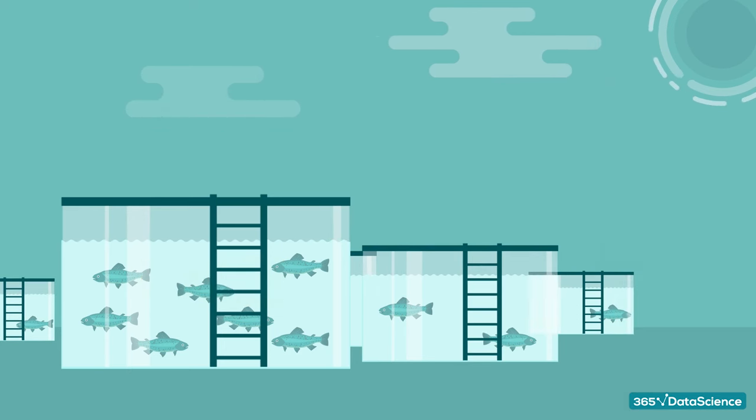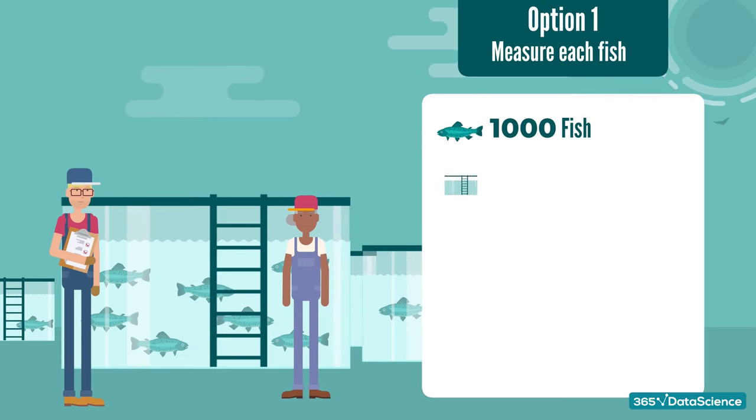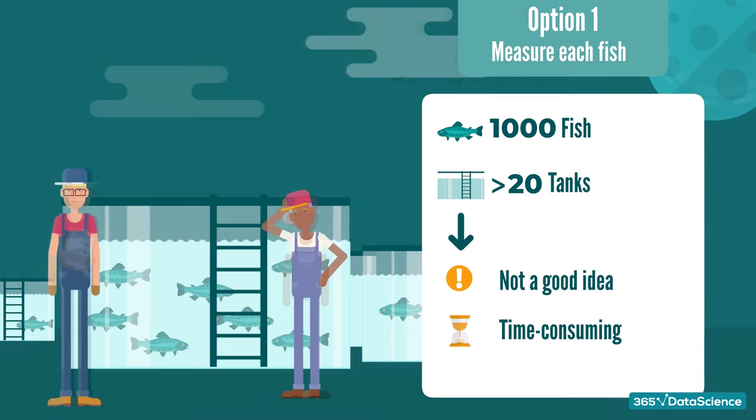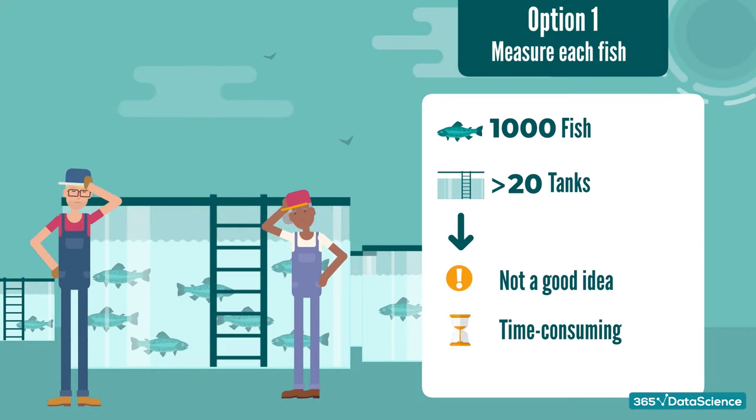Let's think about it for a second. One option is to try to measure each fish separately, but there are 1,000 fish in each tank, and more than 20 tanks stocked with first-class fish. So manually measuring each fish doesn't sound like a good idea. It will simply take too long. You and your employees will be stuck measuring fish from dawn till dusk, which is highly inefficient.